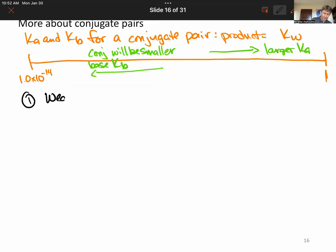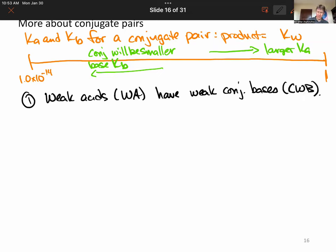So weak acids, which we will now call WA, have weak conjugate bases. And we'll call it conjugate weak base, right? One of them's got to be the conjugate anyway. Two, strong acids, something we've been dealing with for a while now.